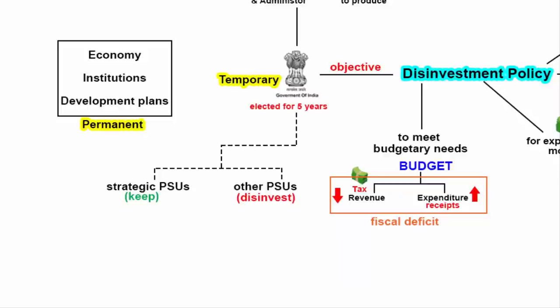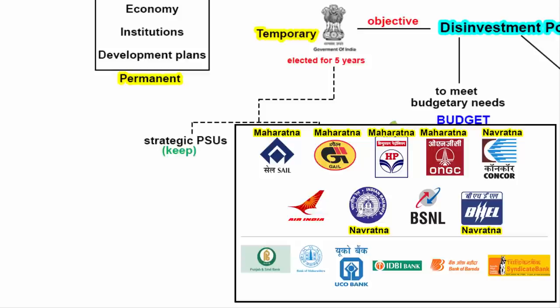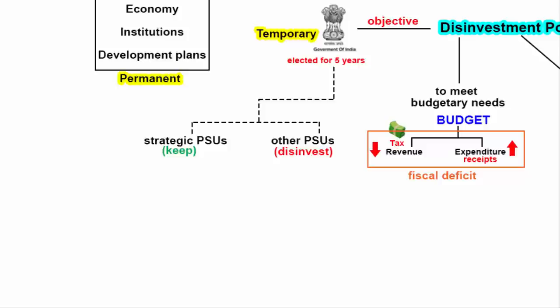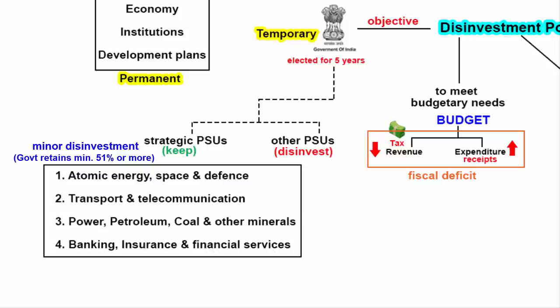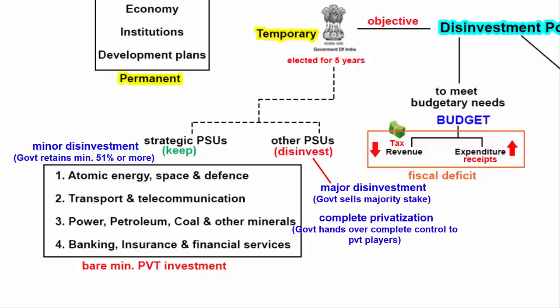Today the government wants to keep some PSUs in strategic sectors and disinvest everything else. The government is even disinvesting profitable PSUs. When a Navaratna company is offered to the private sector, it becomes clear that regardless of whether a PSU is making profit or not, the government wants to get out of businesses. The government has announced it will keep only three or four key strategic sectors: Atomic Energy, Space and Defense; Transport and Telecommunication; Power, Petroleum, Coal and other minerals; and Banking, Insurance and Financial Services. Apart from these four sectors, the government is open for major disinvestment and complete privatization.